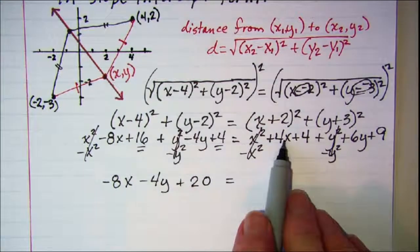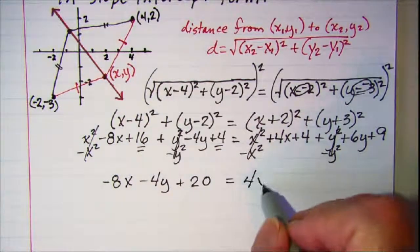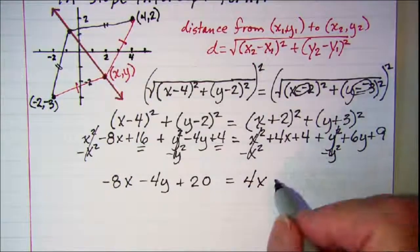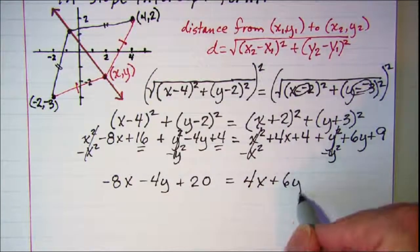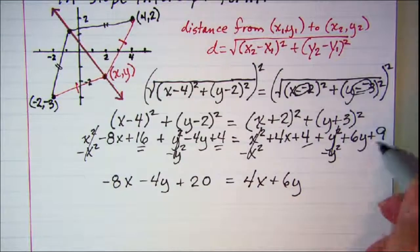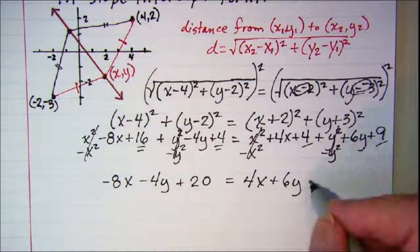On the right side we have 4x + 6y and our constants on the right side combine to 13.